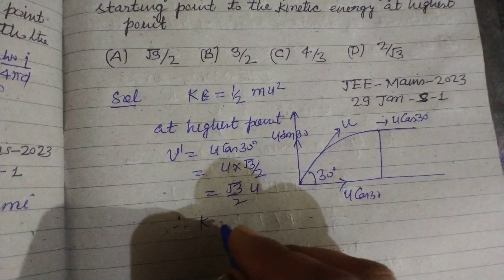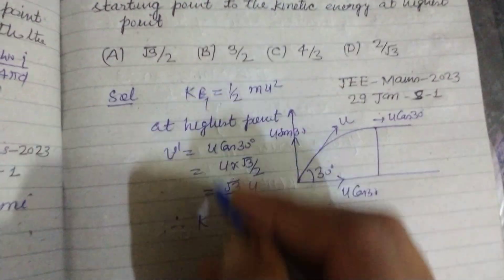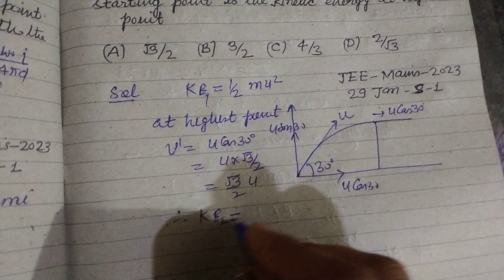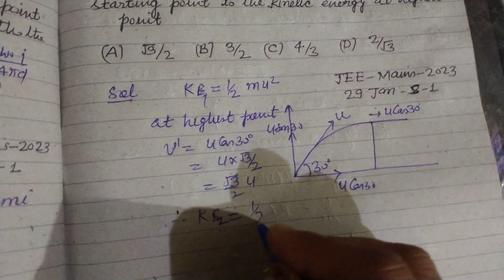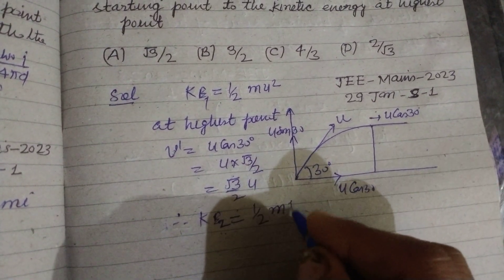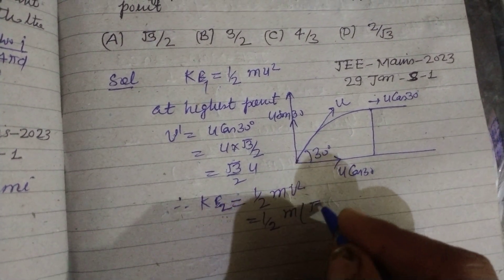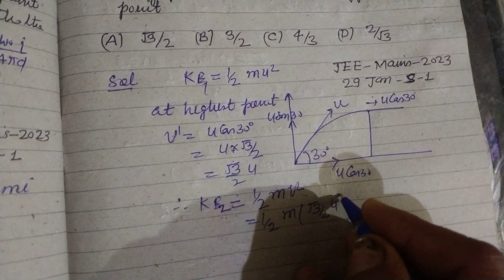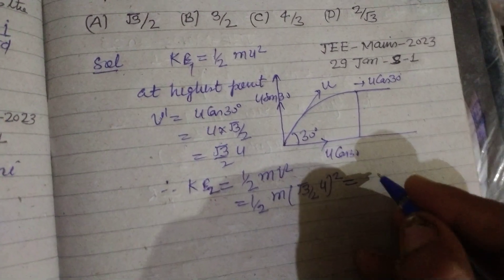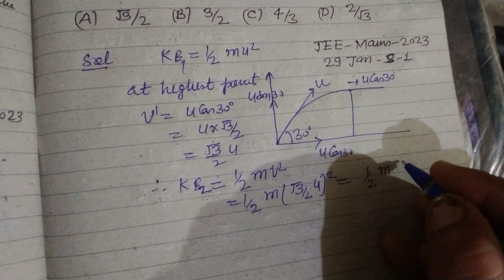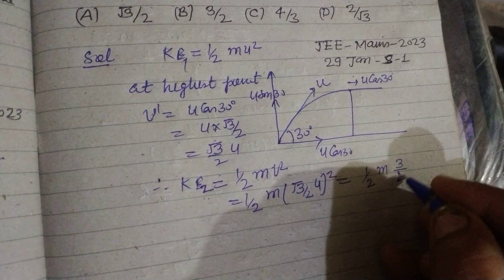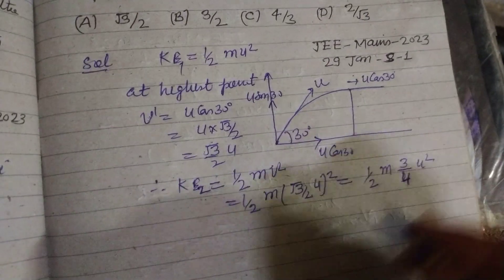Therefore, kinetic energy, this is kinetic energy 1, this is kinetic energy at highest point. KE2 equals half m V squared, or half m, V is root 3 by 2 U whole squared. So this is 1 by 2 m, 3 upon 4 U squared.